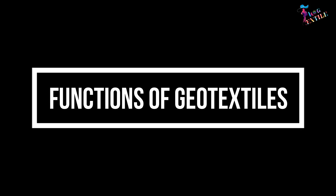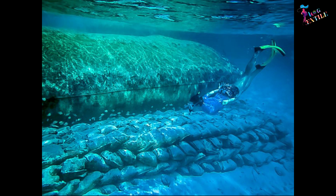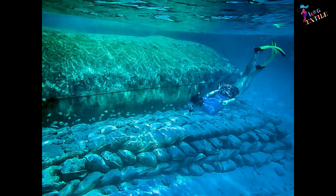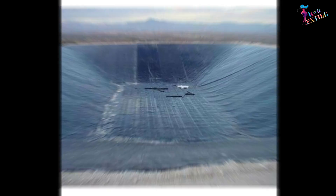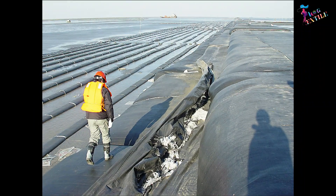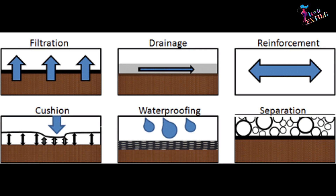The mode of operation of a geotextile in any application is defined by six discrete functions: filtration, drainage, reinforcement, containment, waterproofing, and separation.